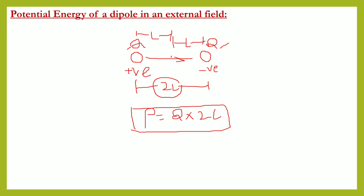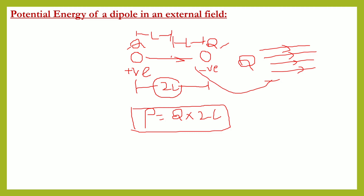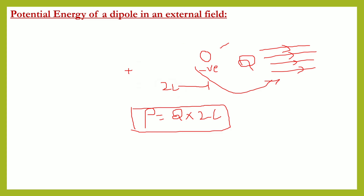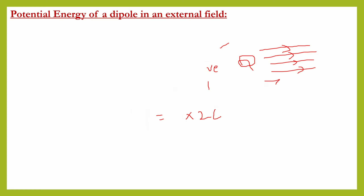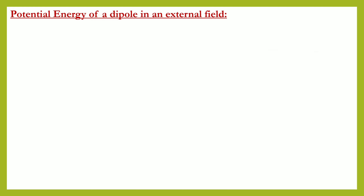This is a prerequisite to understand the potential energy of a dipole in an electrical field. Such a dipole is kept in an external field — external meaning the source is different; we are not considering the electric field produced by the dipole itself. Some external field is there with field lines, produced by some big charge. The dipole is placed into this field. Now let's start — I will erase the dipole definition since you all have already learned it. I hope you know the dipole moment, electric dipole, and uniform field.